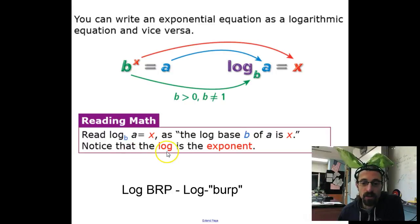Notice that the log is the exponent. This value here is the exponent. The shortcut mnemonic to remembering this is log BRP, which I say is log burp, which means base result power. Again, that's base result power. Log burp.